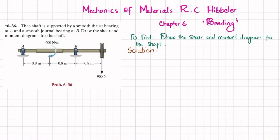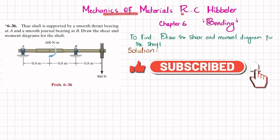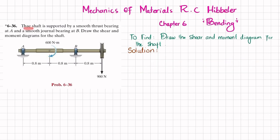Welcome back. Problem 6-36. This problem is taken from chapter number 6, that is bending, and the book name is Mechanics of Material by R.C. Hibbeler. The statement is: the shaft is supported by a smooth thrust bearing at A and a smooth journal bearing at B.